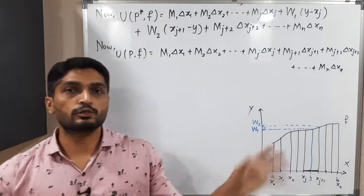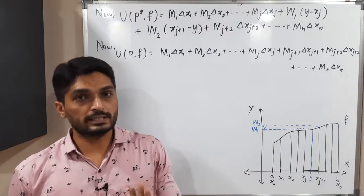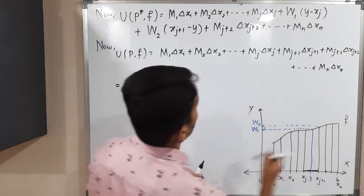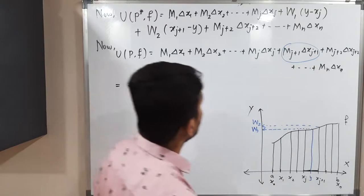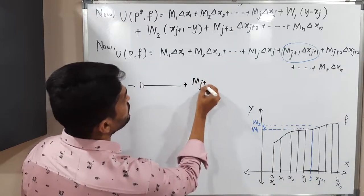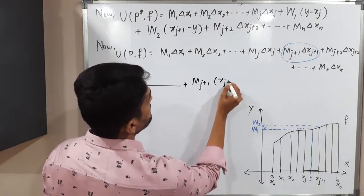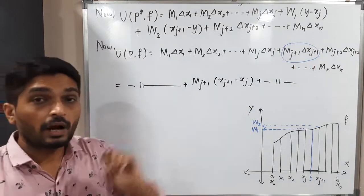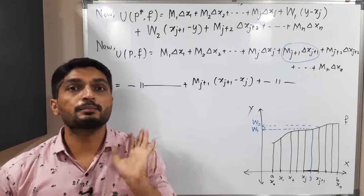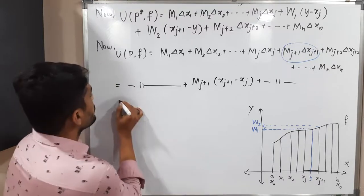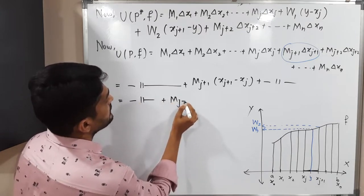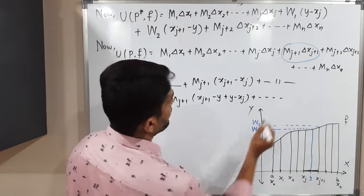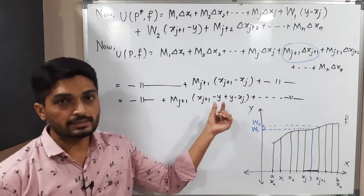Now I will do some adjustment on U(P, F). Looking at the term Mⱼ₊₁ΔXⱼ₊₁, note that ΔXⱼ₊₁ = Xⱼ₊₁ − Xⱼ. I am going to add and subtract Y inside, so: Mⱼ₊₁(Xⱼ₊₁ − Xⱼ) = Mⱼ₊₁(Xⱼ₊₁ − Y + Y − Xⱼ). The remaining terms stay the same.